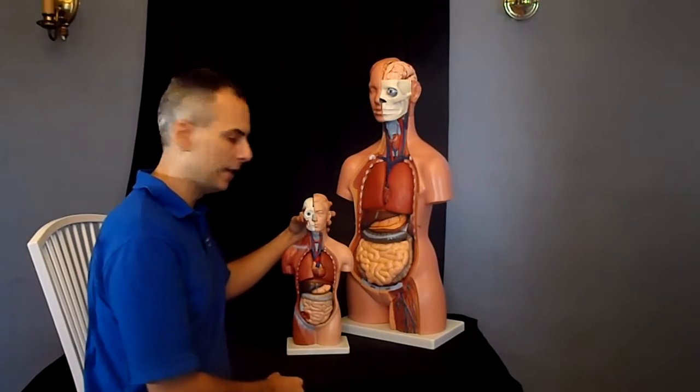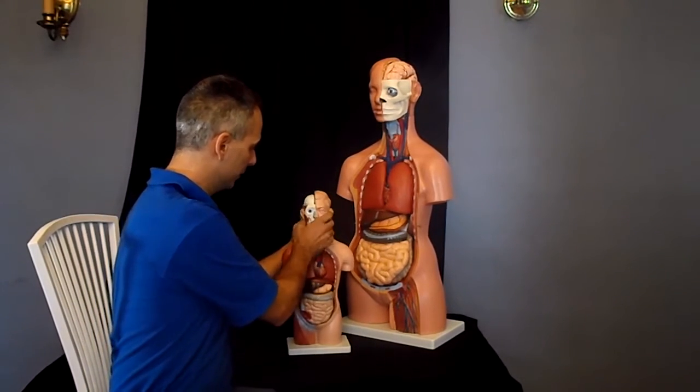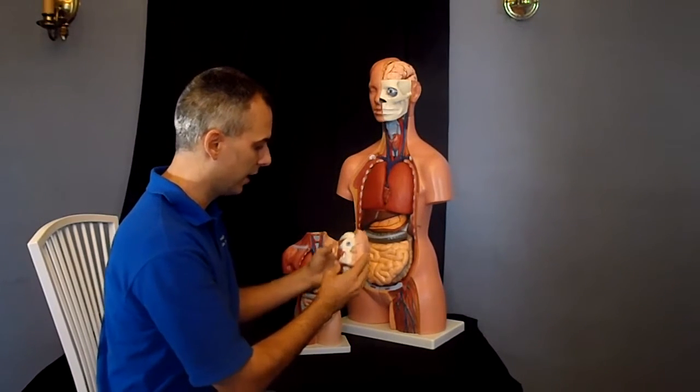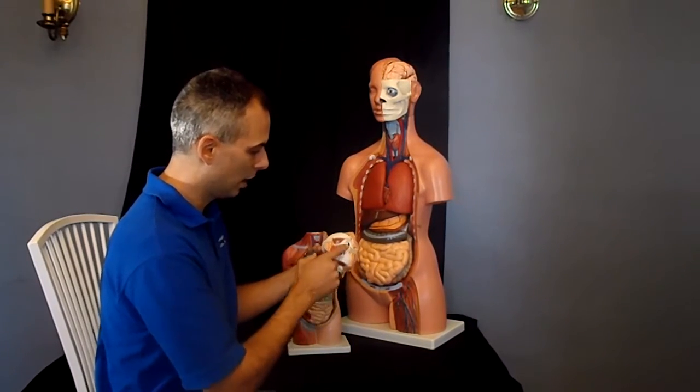We start off with the head which can be taken off of the neck. On one side is the skin colored face and on the opposite side we have parts of the skull showing the jaw musculature.